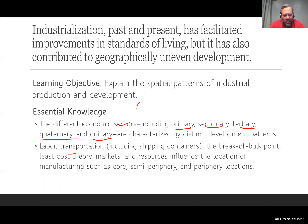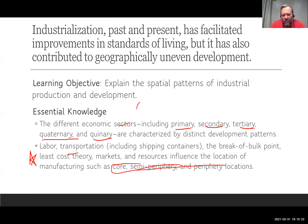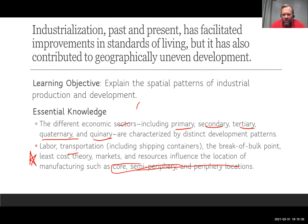We'll also look at factors determining why manufacturing is located where it is. The terms core, semi-periphery, and periphery will come up in a couple of sections — they roughly mean most developed, middle developed, and less developed, but we'll hone in on that more precisely later.